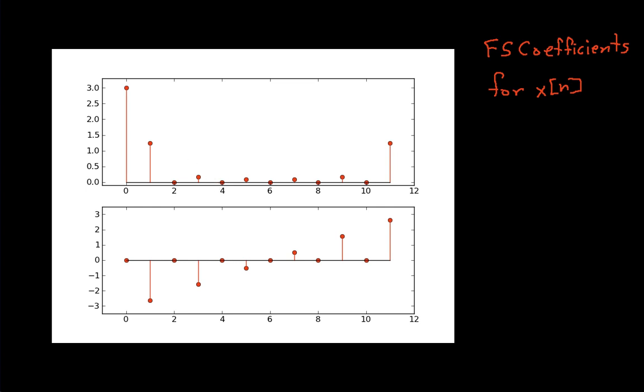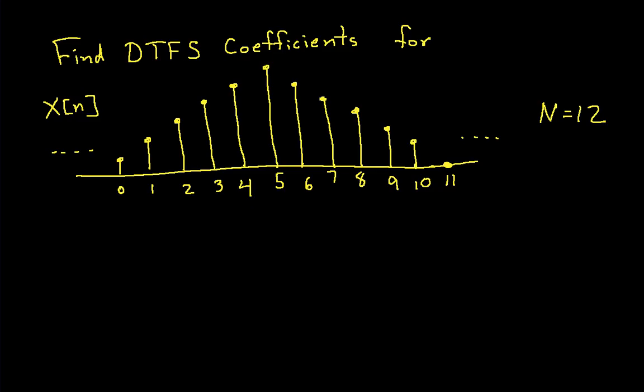So, there you have it. We've found the discrete time Fourier series coefficients for this x. Again, the cool part about this is we've done it without working a summation by noting the fact that this triangle waveform is a rectangular or square wave or rectangular wave convolved with itself. And in doing so,